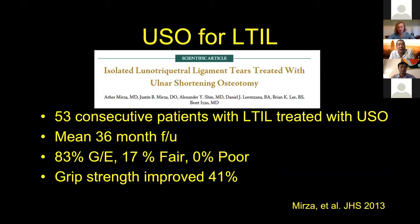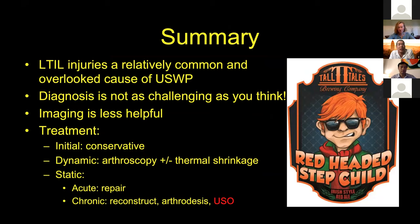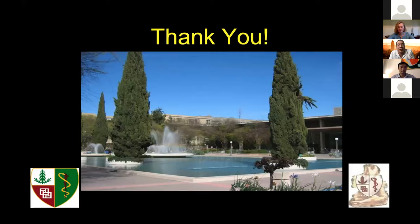In summary: LT injuries are relatively common but overlooked causes of ulnar-side wrist pain — TFCC injury is not the only cause. The diagnosis is not as challenging as you think; imaging is less helpful on this side. For treatment, the initial approach should always be conservative. If you have a dynamic instability pattern, arthroscopy plus or minus thermal shrinkage can be effective. For static acute ones, repair can be employed. For chronic, I prefer the ulnar shortening osteotomy over the others. Thank you very much.